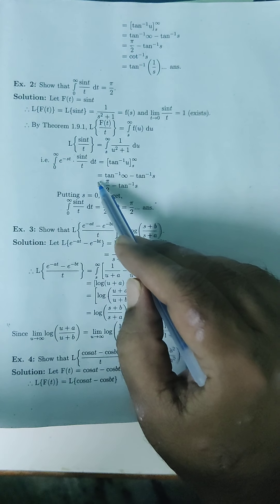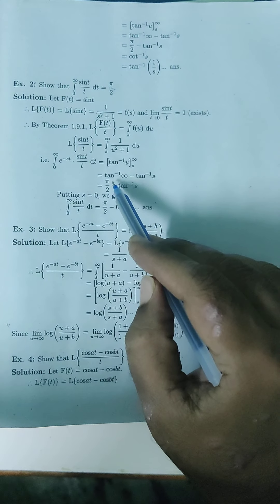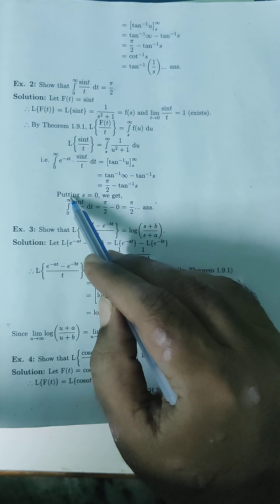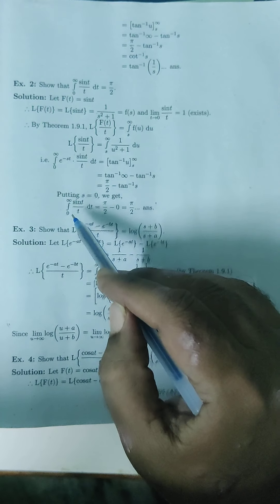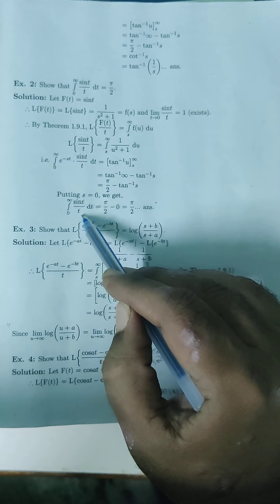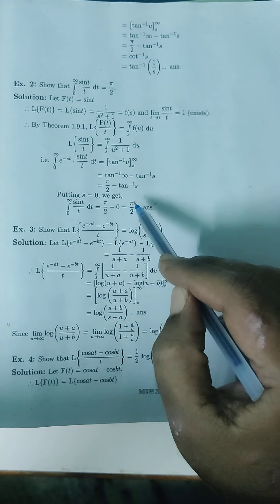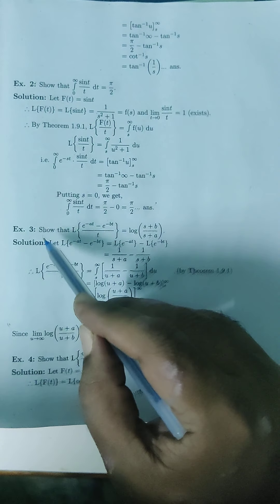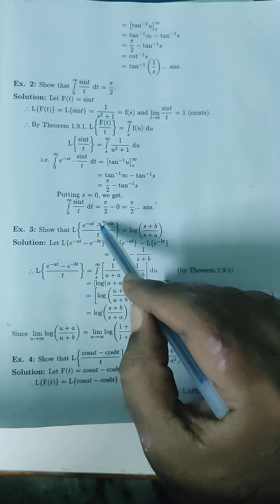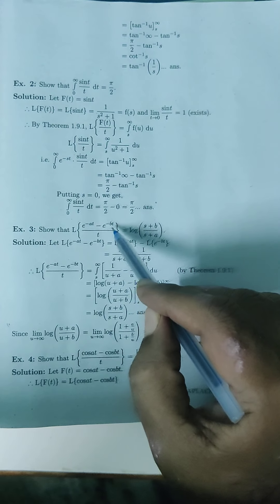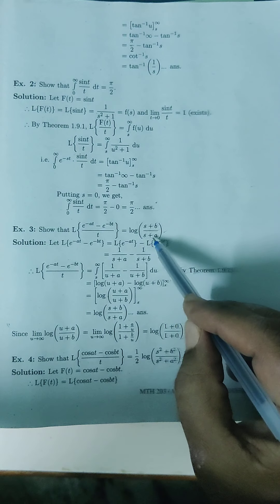From the limit S to infinity, this equals tan⁻¹(∞) minus tan⁻¹(s), which equals π/2 minus tan⁻¹(s). Putting S = 0, we get π/2. Next example: Laplace of (e^{-at} - e^{-bt})/t equals log((s+b)/(s+a)).